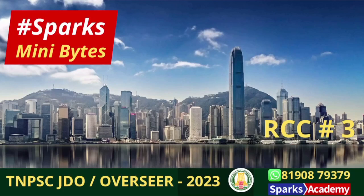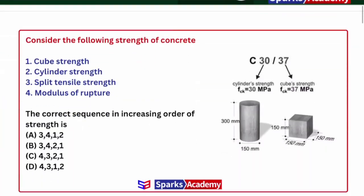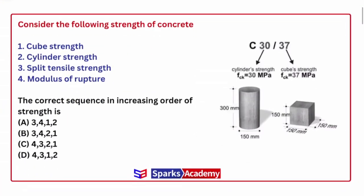Hello JADEVO aspirants, welcome to Sparks Academy. Under video analysis streaming, we are here with Sparks Mini Bites. In this video, RC cylinder small content pack. Consider the following strength of concrete: different forms of strength are given — cube strength, cylinder, split tensile, modulus of rupture. These are given in increasing order in the question, so you know increasing order. Overall strength — either represent principal cube strength, compressive or tensile strength.